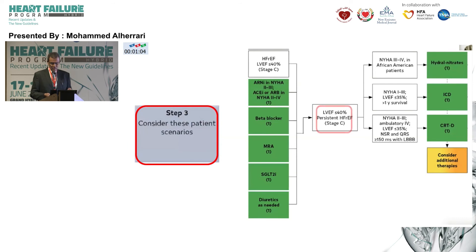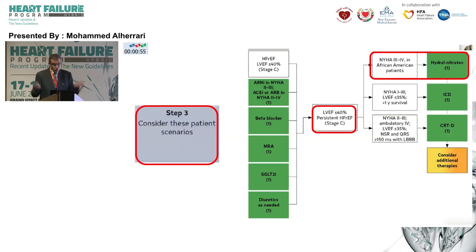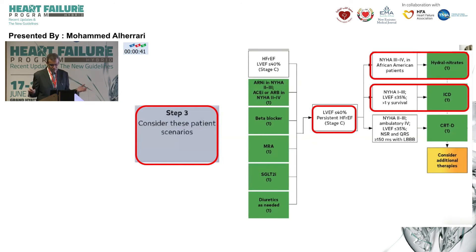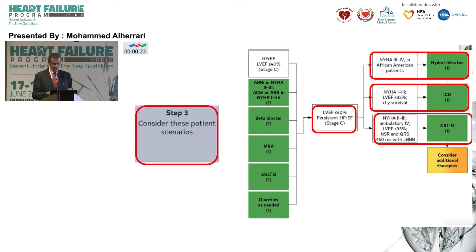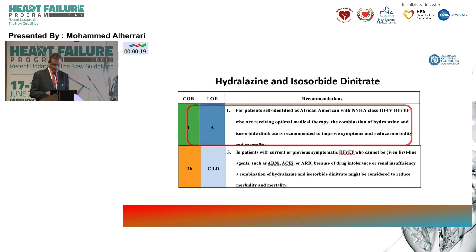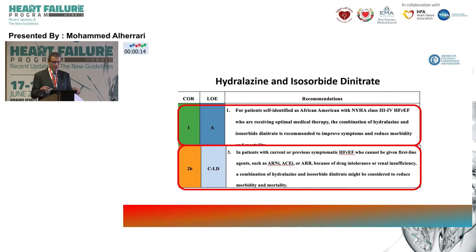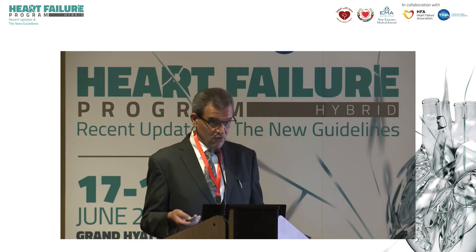Step 3 is to look for specific groups. For Black Americans, there is a Class 1 recommendation to add the combination of hydralazine and isosorbide dinitrate on top of RAAS therapy if still symptomatic. ICD is Class 1 for ejection fraction ≤35%, likely to survive more than one year — not for Class IV hospitalized patients who are likely to die from pump failure. CRT-D is recommended for classic left bundle branch block, QRS >150ms, in Class II–III or ambulatory Class IV. For non-ischemic patients who cannot tolerate ACE inhibitors or ARBs — mostly those with advanced kidney disease with eGFR around 20, or hyperkalemia — hydralazine/isosorbide dinitrate is a Class 2 recommendation.